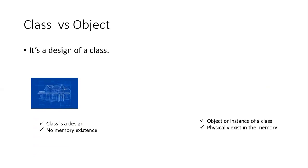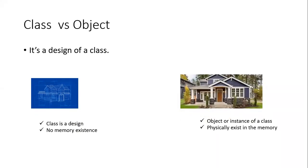Now let's discuss class versus object. It's a very simple concept. Consider a blueprint of a house designed by an architect or engineer — it projects what the house will look like, but the blueprint does not physically exist. In the same way, in object-oriented programming, the class doesn't have a memory existence, but the object — or the instance of the class — is a physical existence in memory.